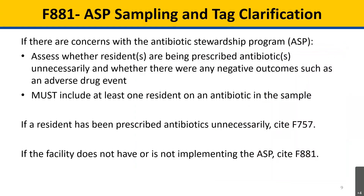If there are concerns with the ASP, surveyors must include at least one resident on an antibiotic in the resident sample to assess whether the resident is being prescribed an antibiotic unnecessarily and whether there were any negative outcomes, such as an adverse drug event. Instances of prescribing antibiotics unnecessarily should be cited at F-883.45D, which is F-tag 757. These findings may support citing F-881 as well, in which case the surveyor must also show that the facility is not implementing part or all of the ASP.